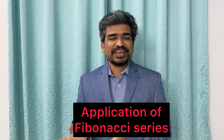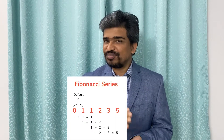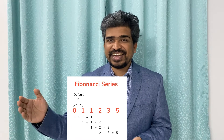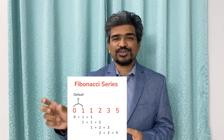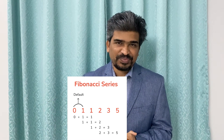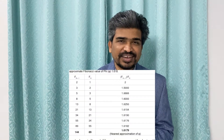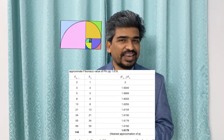Let's learn about the application of Fibonacci series in one minute. The Fibonacci series consists of 0, 1, 1, 2, 3, 5, 8, and so on — the sum of the two previous numbers gives the next number. If we take the ratio of one number with the previous number, you get a ratio close to 1.618, and that is called the golden ratio.